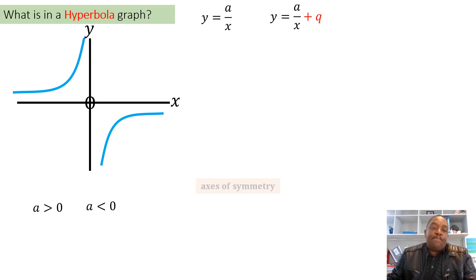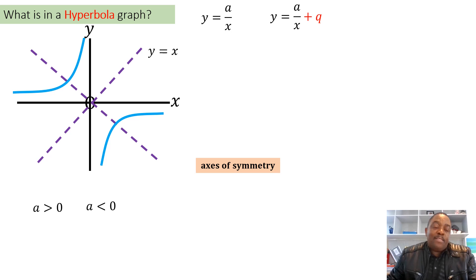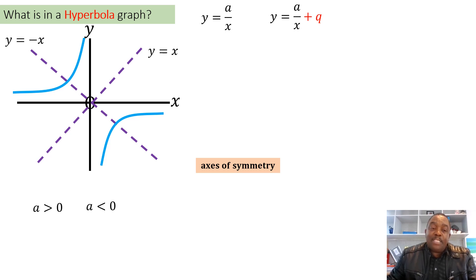The graph also has axes of symmetry — lines that cut the graph into identical halves. One has a positive gradient: y = x, forming a 45-degree angle with the x-axis. The other is y = -x, with a negative gradient, forming a 135-degree angle with the x-axis. These gradients never change — they remain +1 and -1 regardless of whether the graph shifts up, down, or sideways.